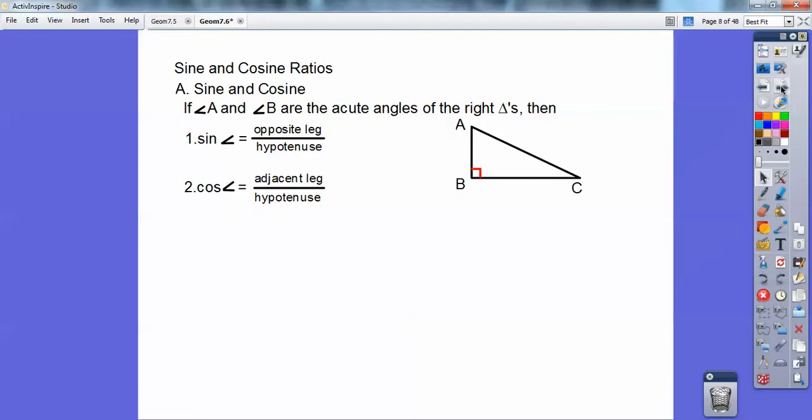And then the cosine, the cosine is the adjacent leg. So if I was talking about angle A again, the adjacent leg would be this leg right here over the hypotenuse. Okay, and of course the tangent is opposite leg over the adjacent leg.